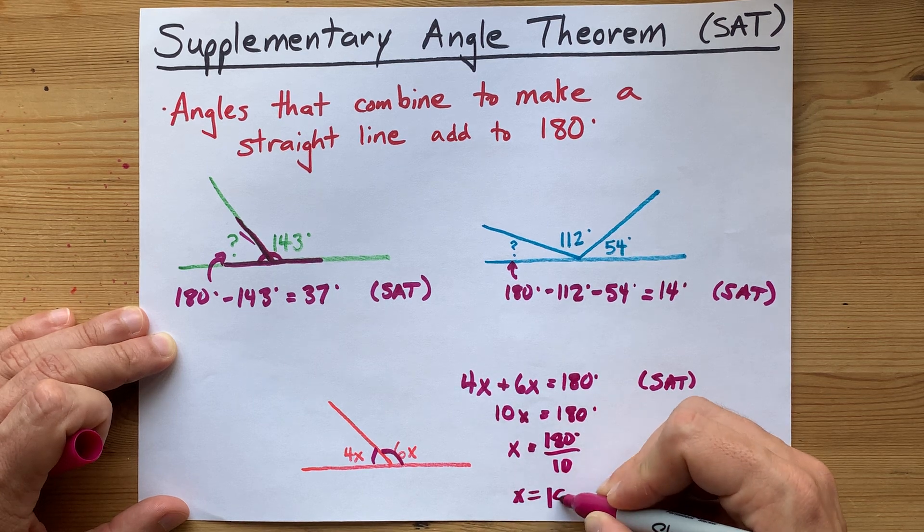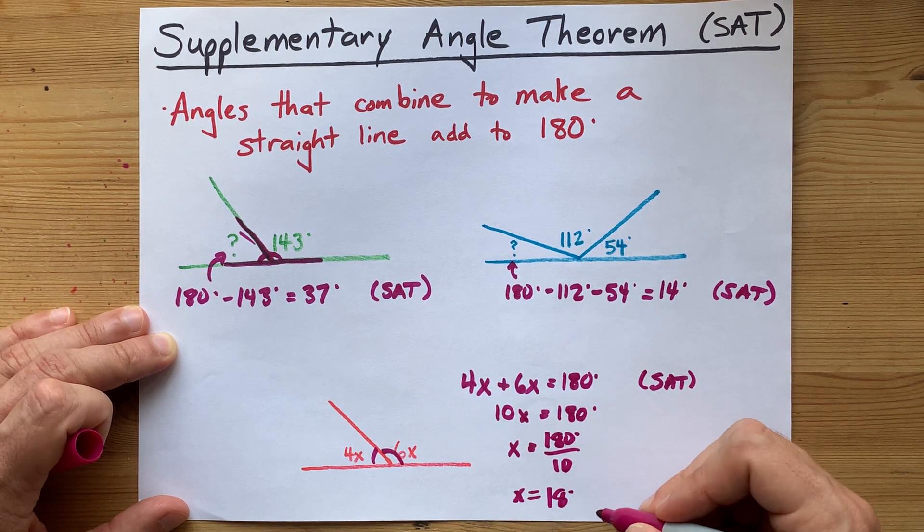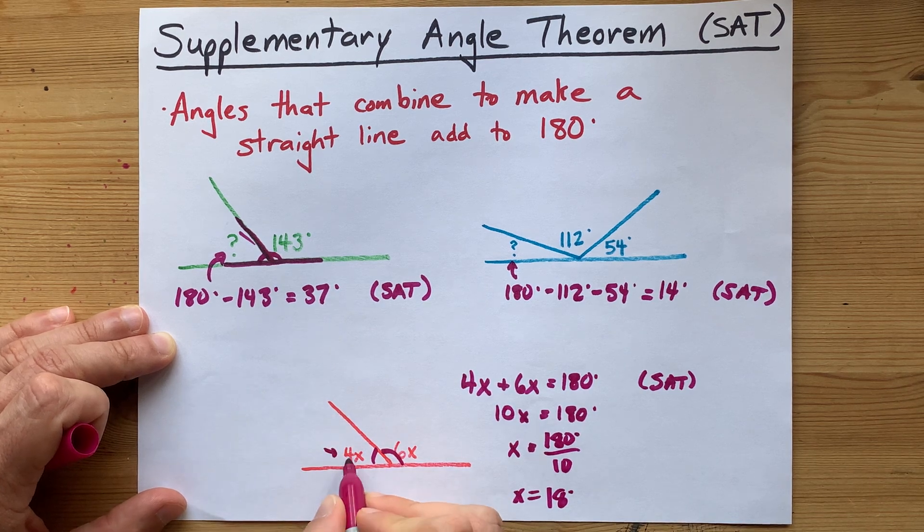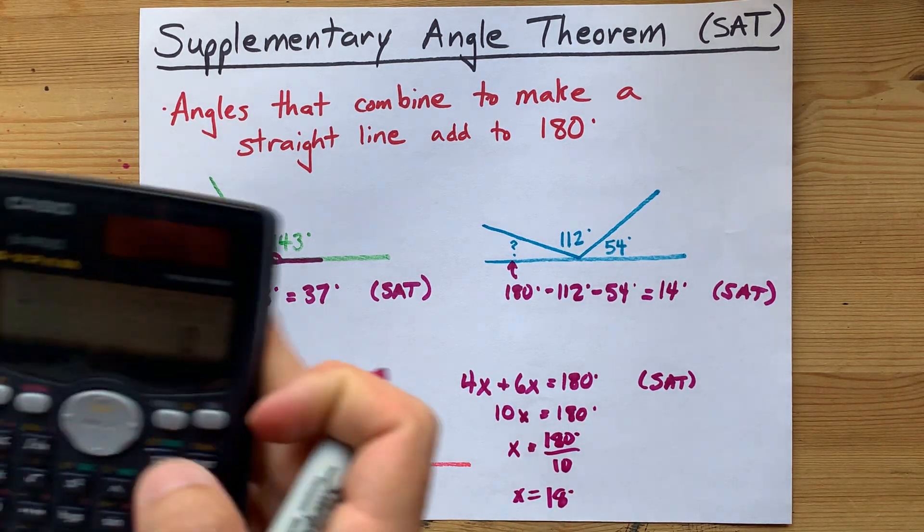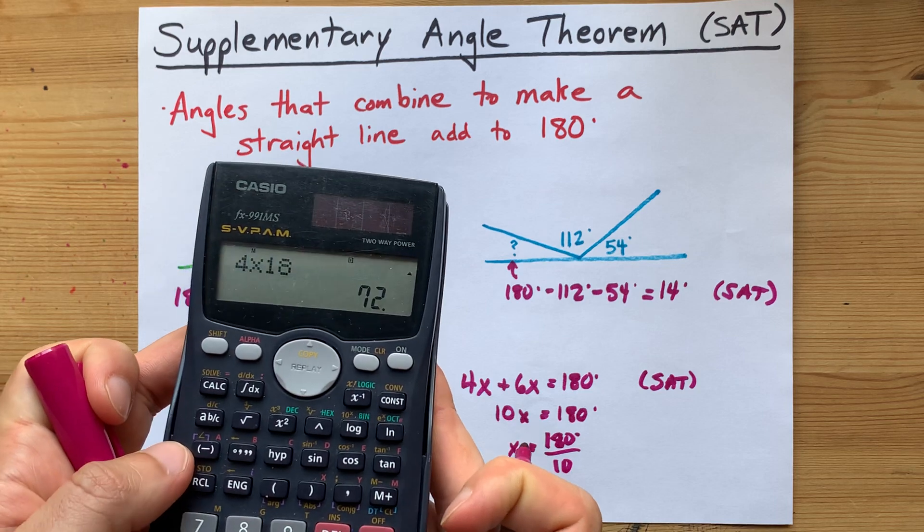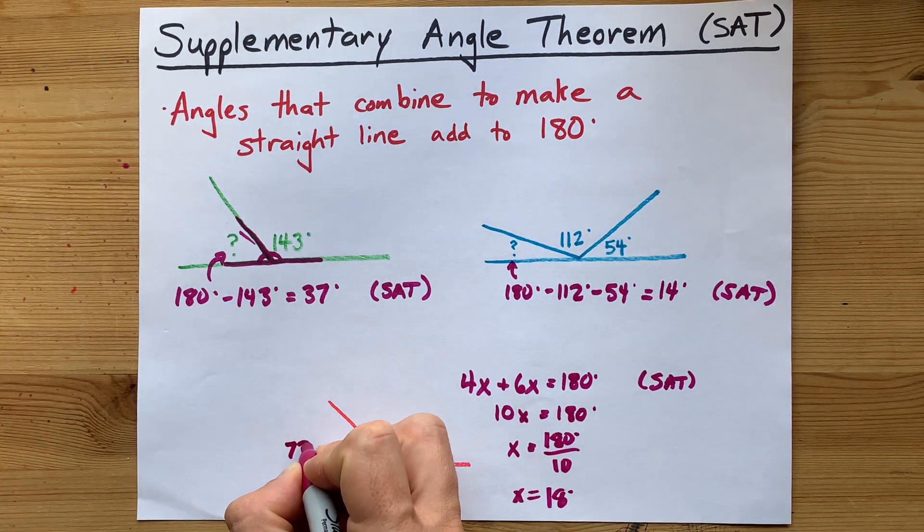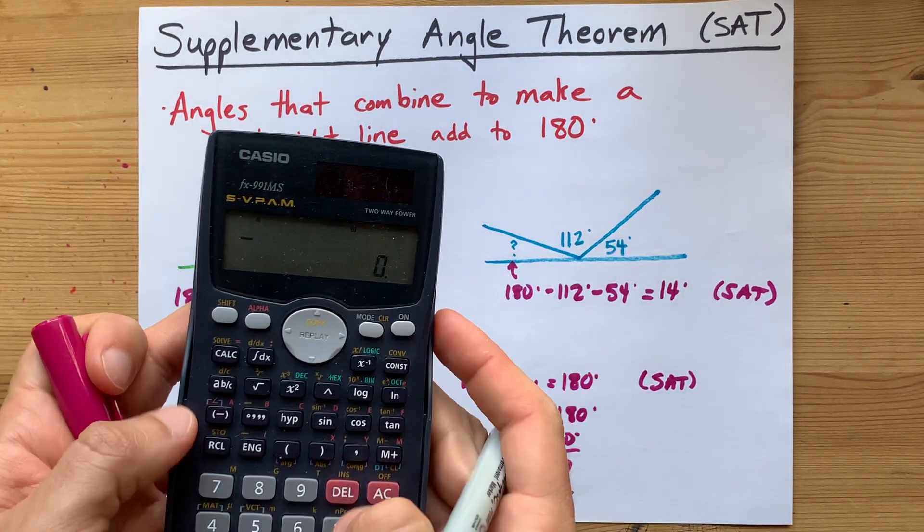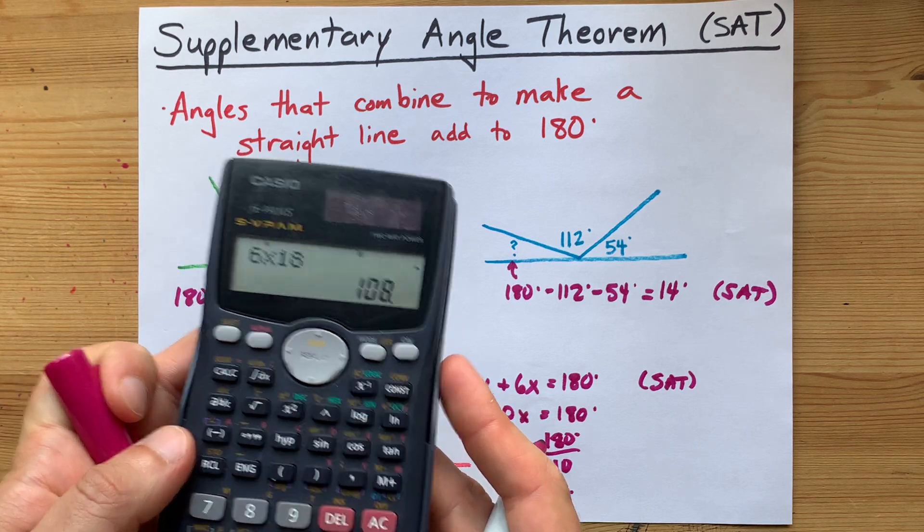Each X apparently is worth 18 degrees. Now that means this angle is 4 times 18. What is 4 times 18? 72 degrees.